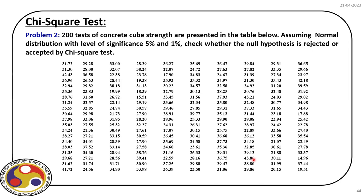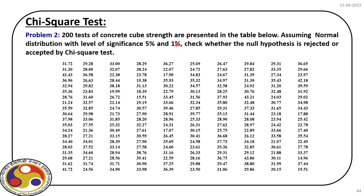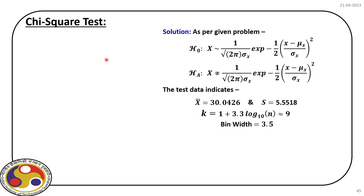We move to a different example: 200 test data of concrete cube strength are available. We assume the population follows a normal distribution and check whether the null hypothesis is rejected or accepted at significance levels of 5% and 1%. The null hypothesis is that x, the random variable, follows the normal distribution — fixing the PDF expression. The alternative hypothesis rejects that claim.